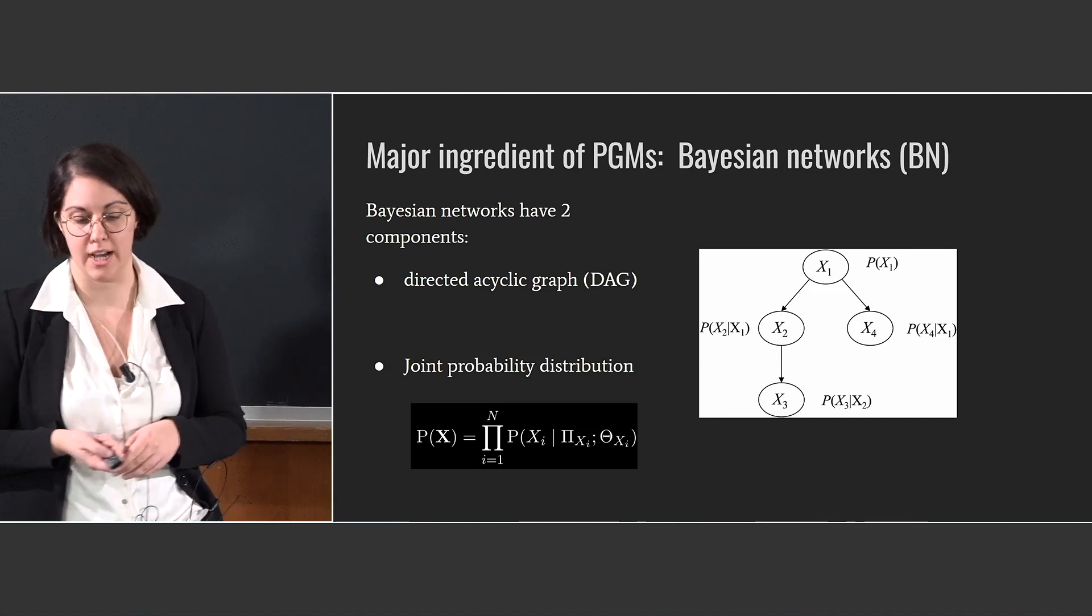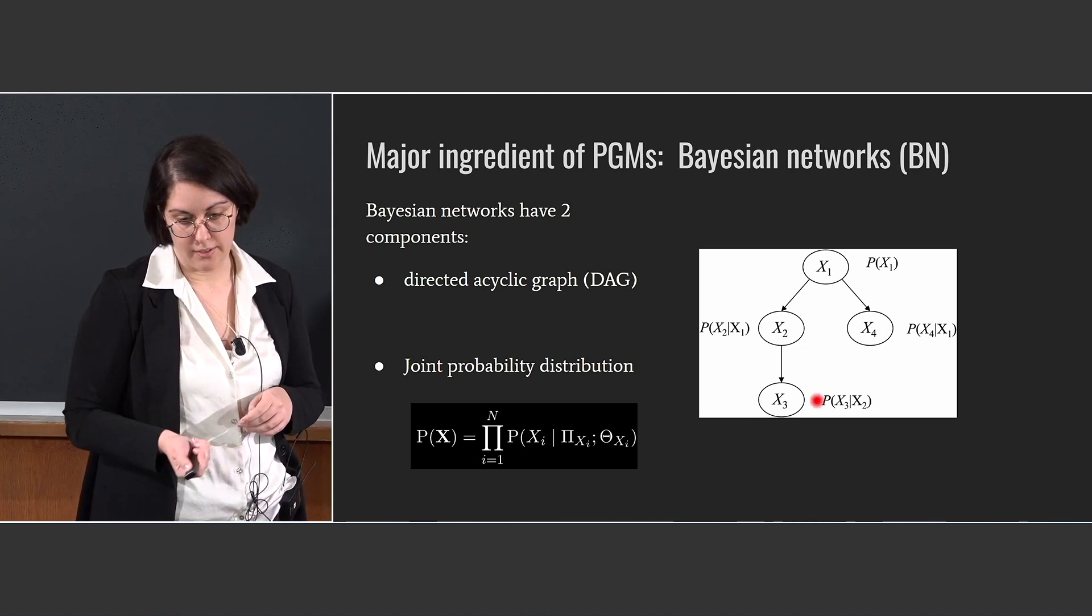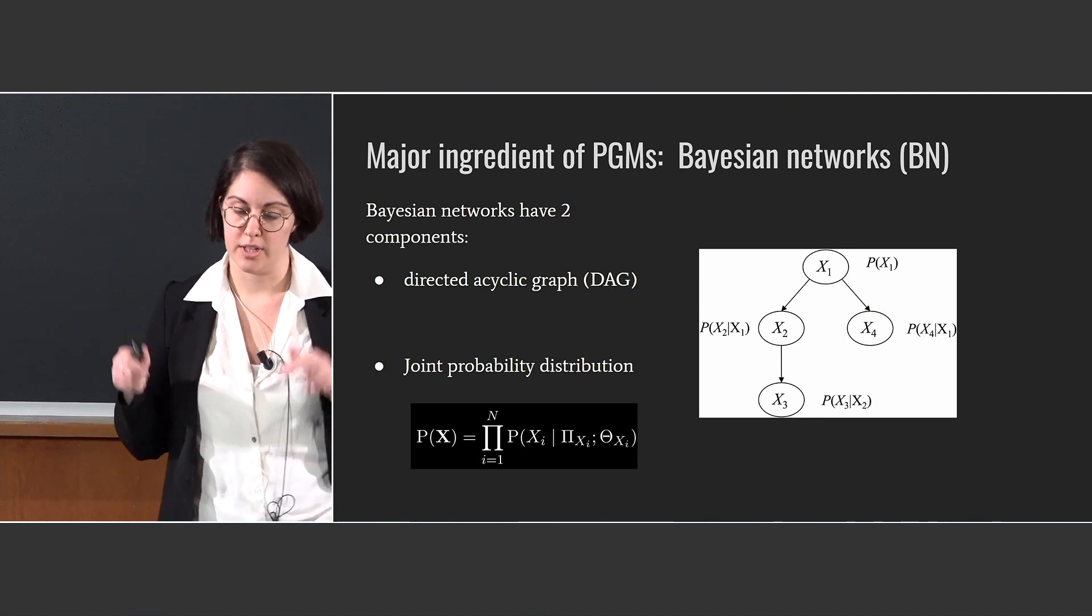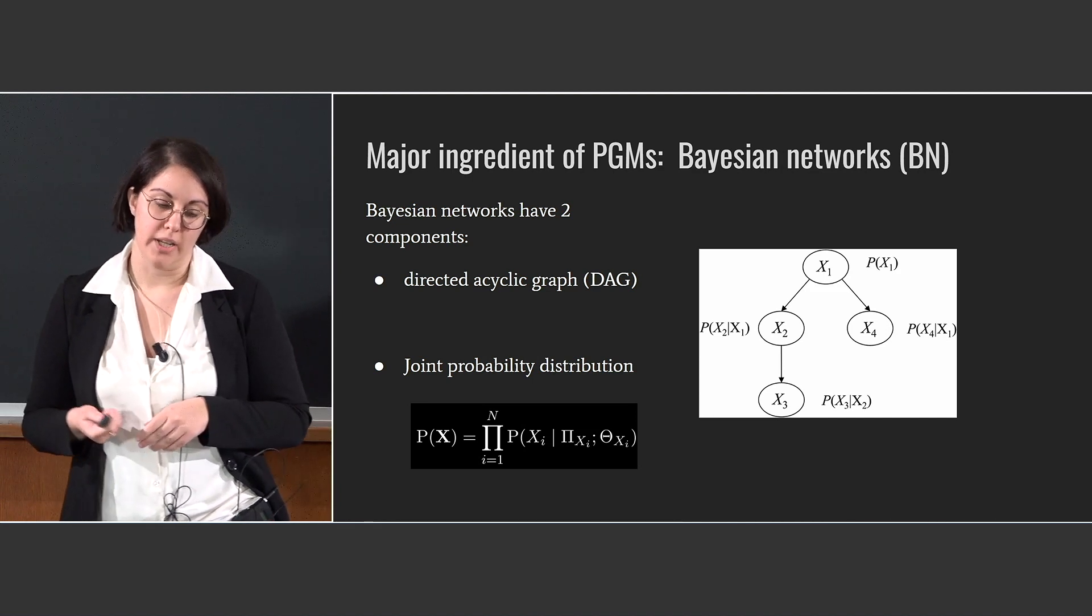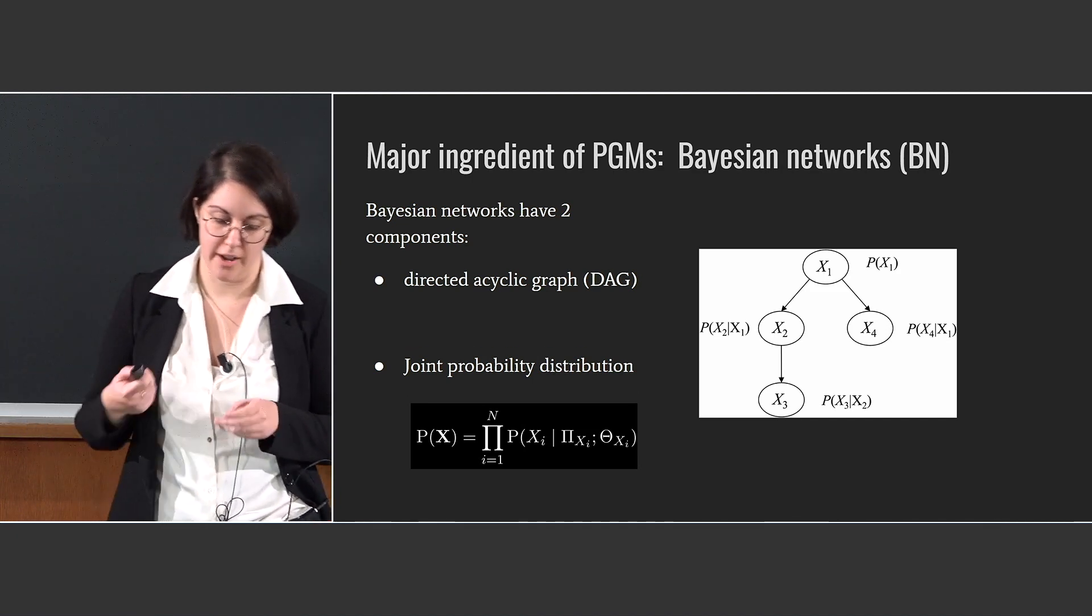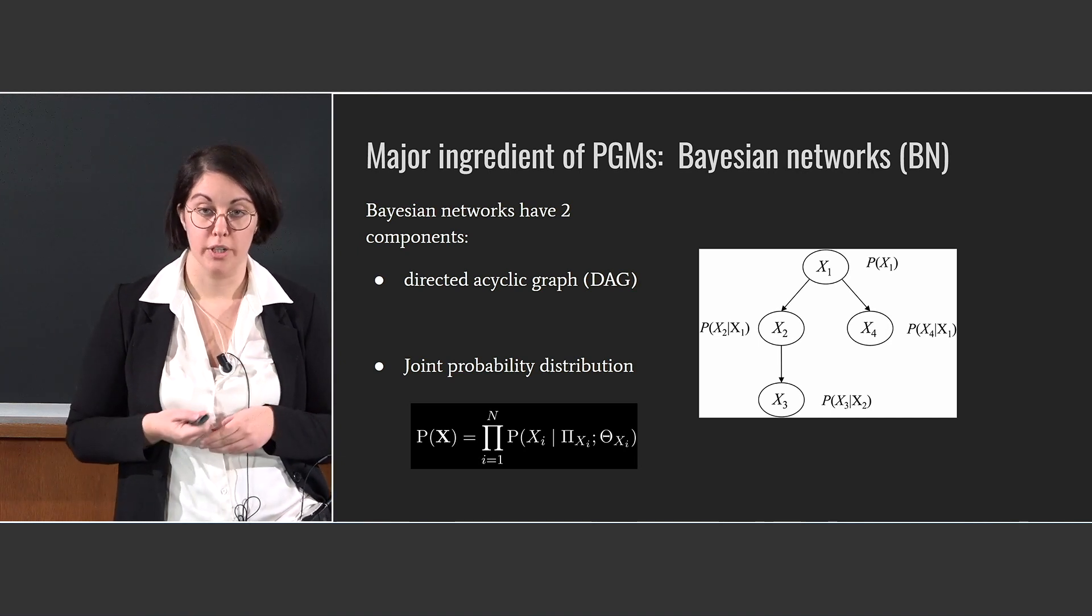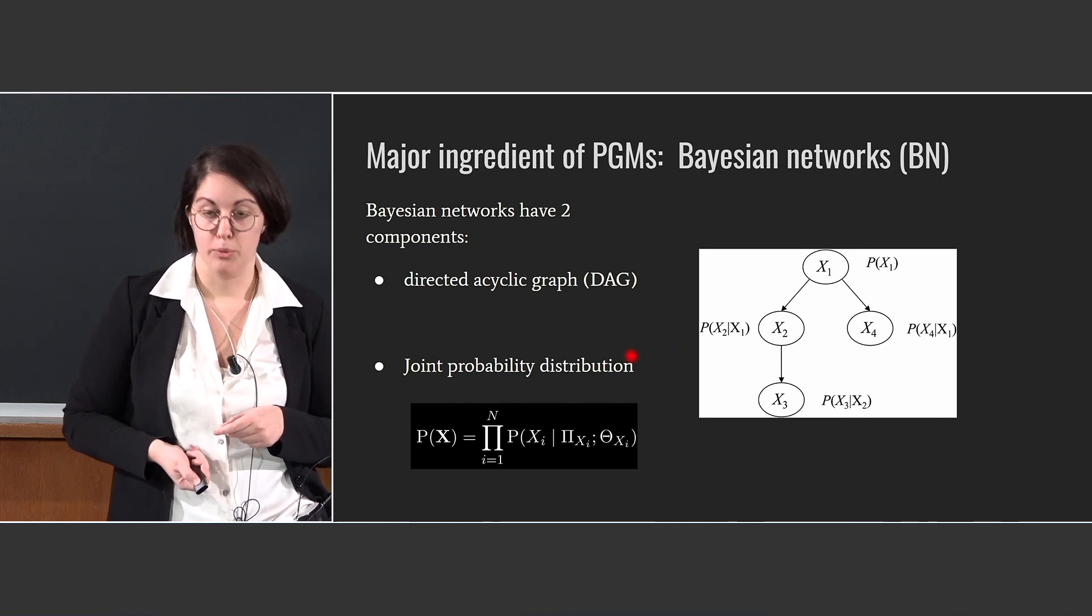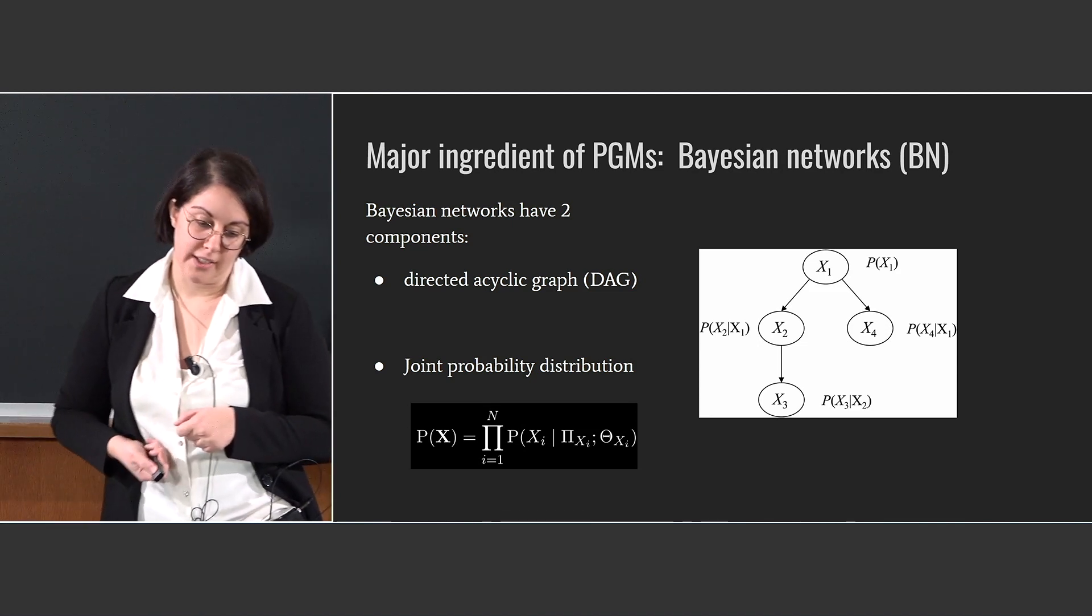I will only talk about the causal structure learning algorithms that aim to reconstruct the Bayesian network, that you can see here on the right, associated to the true structure of the causal model. These usually are described by directed acyclic graphs, and they are associated to the joint probability distribution that is factorized in terms of local distribution that depends only on the parent of the xi node.